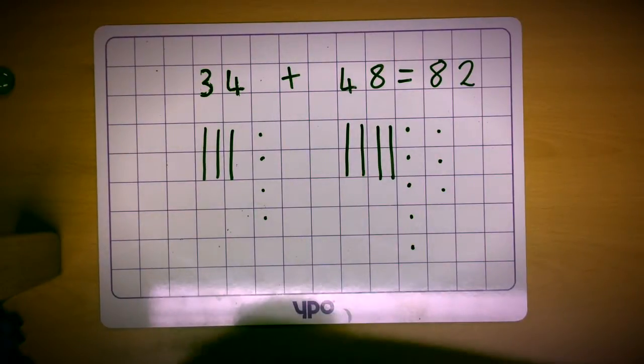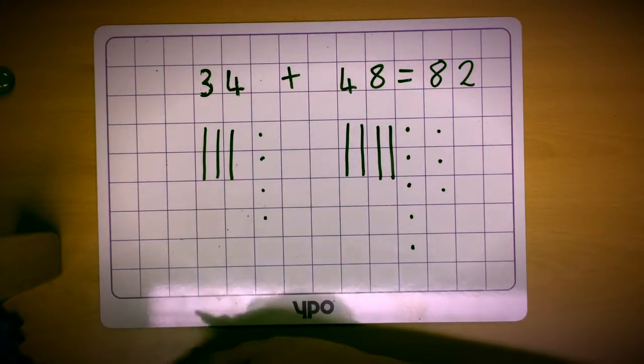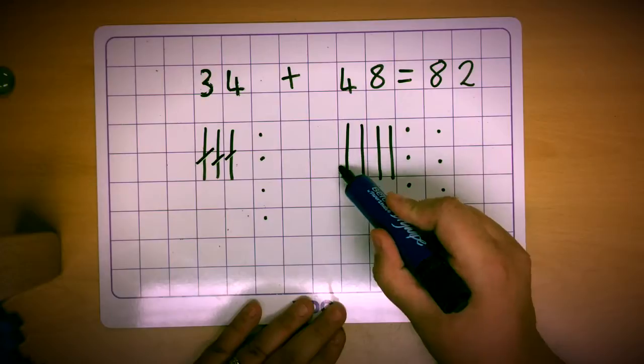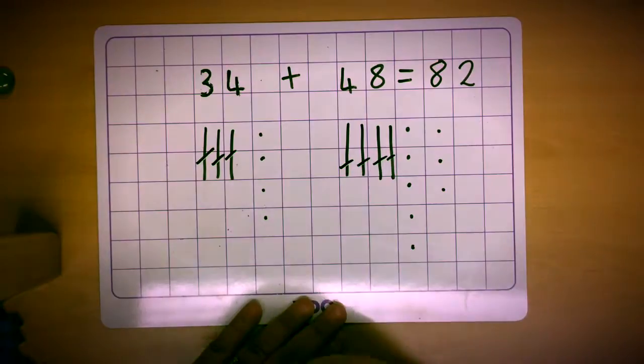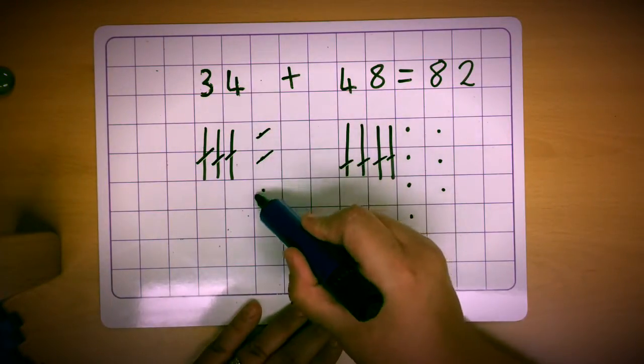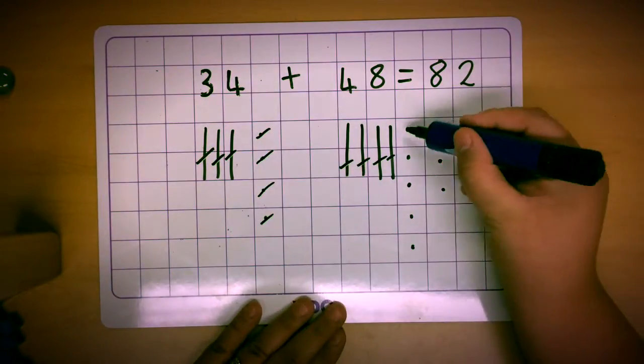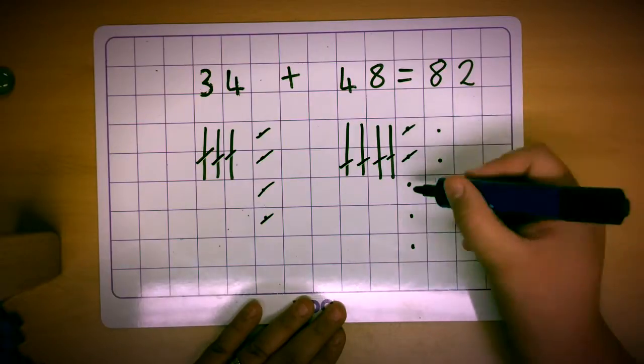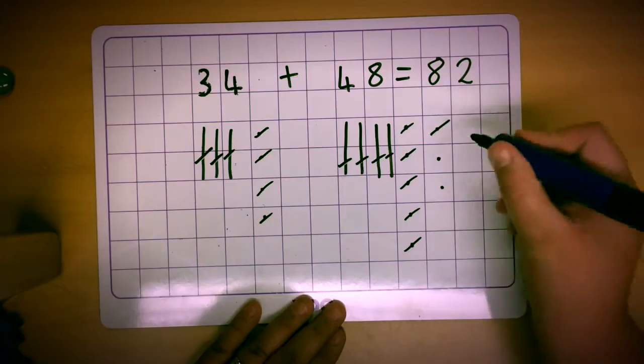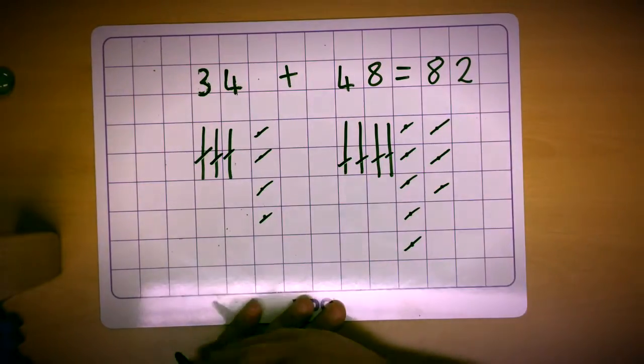The same idea works for this as it does with the actual ten sticks. The children will still count the ten sticks first. 10, 20, 30, 40, 50, 60, 70. They will still then count on the little ones after that. 71, 72, 73, 74, 75, 76, 77, 78, 79, 80, 81, 82.